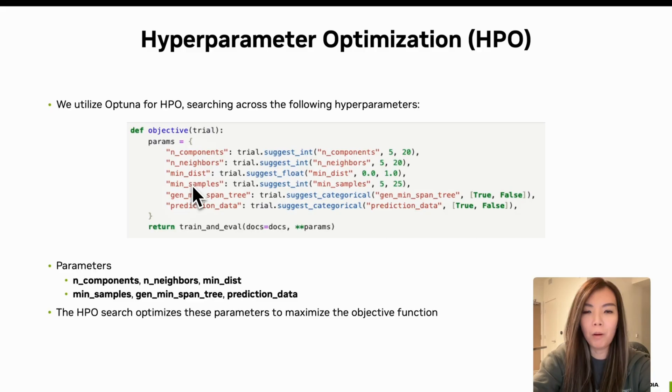Min_samples is the minimum samples in HDBSCAN clustering. Gen_min_span_tree is whether to generate the minimum spanning tree. Prediction_data is whether prediction data should be added to the model.